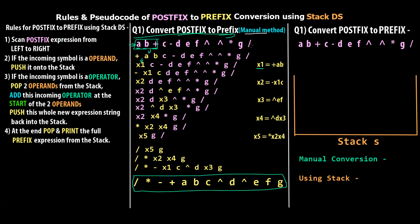So you can see ab+ becomes +ab in prefix format. Then you consider +ab as x1, and you repeat the entire process until all sub-expressions are converted to their respective prefix format and ultimately you get the final result. This is the final prefix expression of this postfix string. We are going to take this result and use the stack data structure to convert the same postfix string, then cross-check the answer to verify our process.